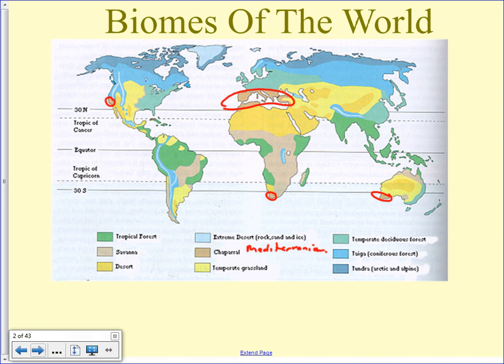Temperate grasslands — the general name. Other names include prairie, and in Europe and Asia they call it steppe, but essentially it's the same as what we live in. We live in the prairie — that's the biome we're part of. Then we have temperate deciduous forest.